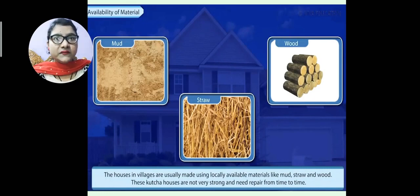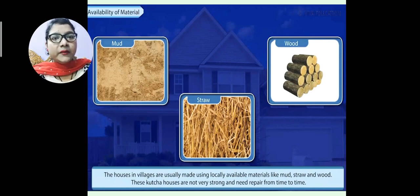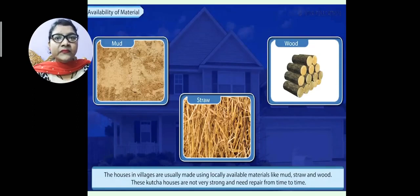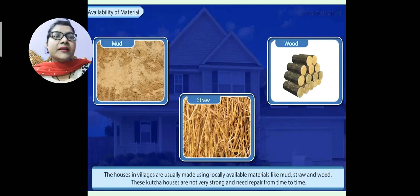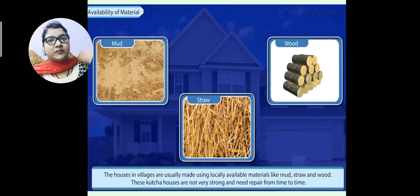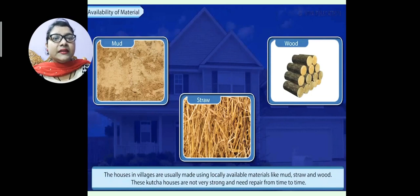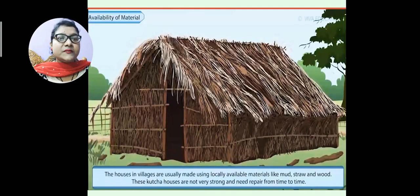Moving to the next factor — availability of material. In rural areas and villages, people use materials like mud, straw, and wood, because these are easily available and cheap. That's why most village houses are kacha houses, which are not very strong and need repair from time to time. You can see the picture of kacha houses made using mud, straw, and wood.